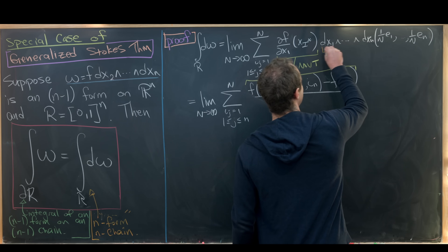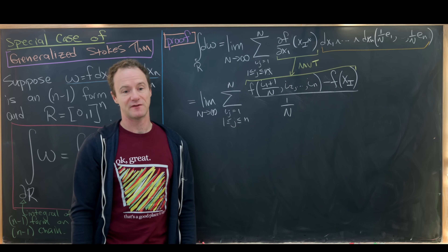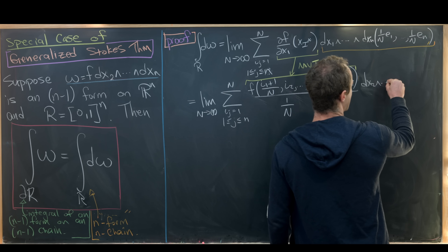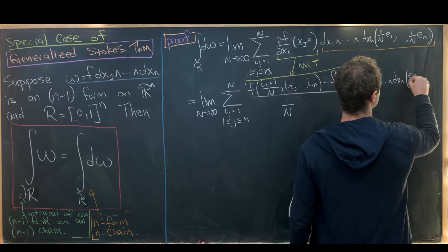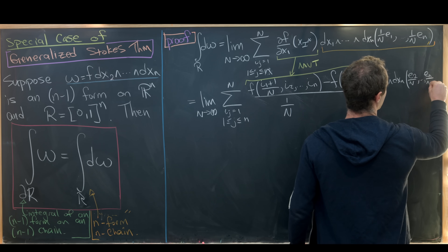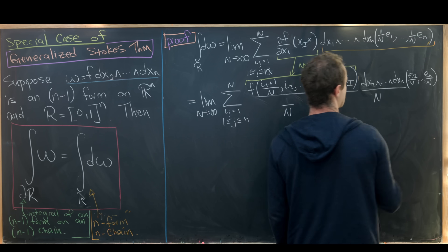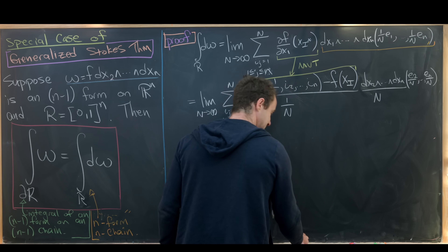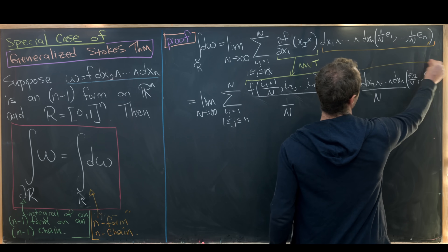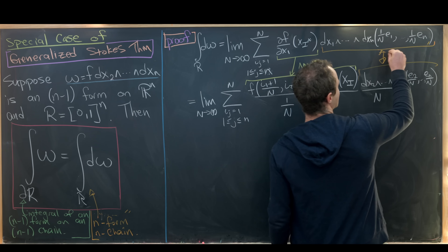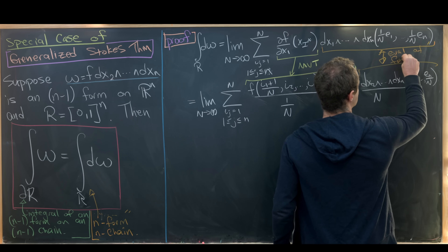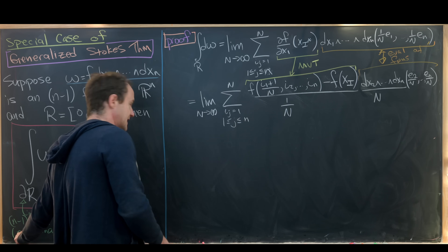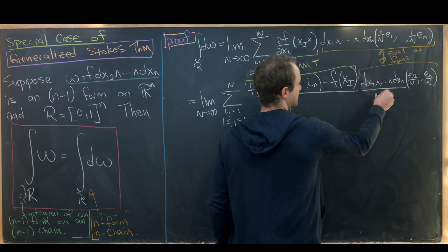Now we can use the definition of evaluation of n forms to simplify a little bit, given that these vectors have such a nice form. Here we're going to get dx2 wedge all the way up to dxn evaluated at (e2/N, ..., e_n/N), and then we can do that if we put an N in the denominator. This follows from what it takes to evaluate an n form and an n minus 1 form. The N and the 1/N will cancel, which is good because we're starting to get some simplification.